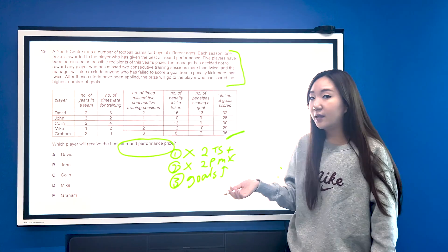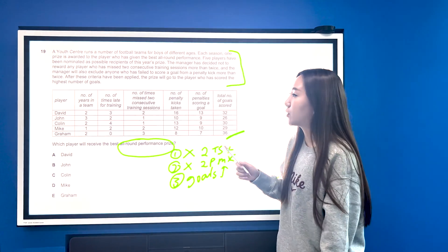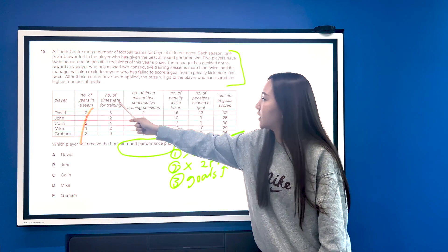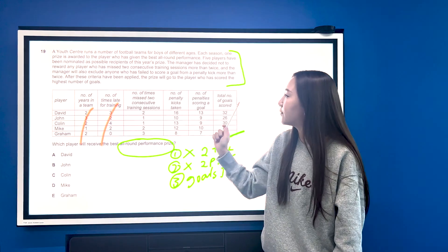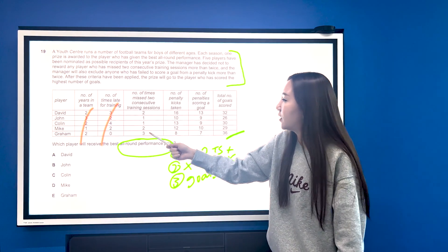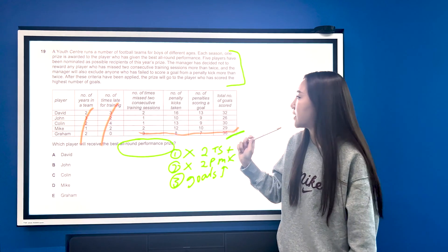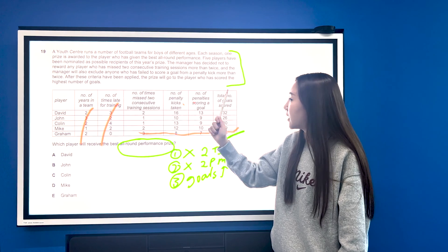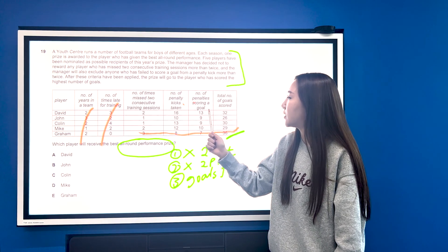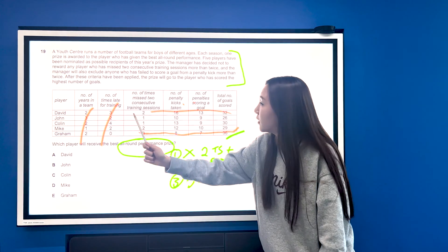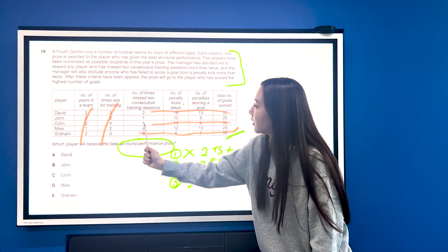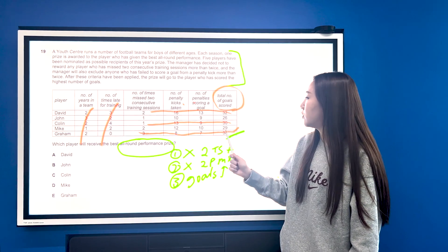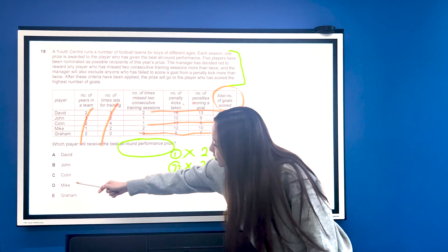So again it's a very familiar question, I'm sure you've seen this come up multiple times. So we'll just go through in time, we'll look at which one is most important. That first column we do not need, this one we also don't need, so we're just looking at the remaining. Number of times missed two consecutive training sessions. The only person excluded is Graham down here, so he's out. Then we need to look at both of these little sections here, number of penalty kicks taken and number of penalty kicks scoring a goal, so the difference cannot be greater than two, immediately excluding David and also excluding Colin. So out of John and Mike, who has scored most goals? Well it's going to be Mike, so the answer is D.